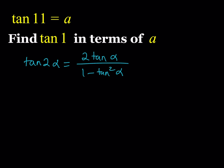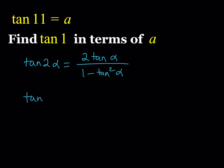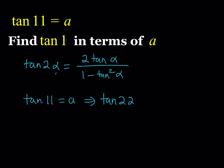I'd like to use 11 as my alpha, which means I can find tangent 22 here. If tangent 11 is A, then we can find tangent 22 because 22 is 2 times 11. So our alpha is 11, and replacing alpha with 11 gives us 2 times tangent 11 divided by 1 minus tangent squared 11. This is the relationship between tangent 22 and tangent 11.